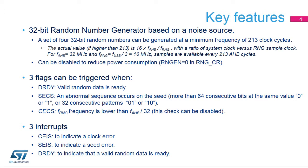A clock error current status flag is set if the RNG clock is less than HCLK clock divided by 32. This check can be disabled, especially when the RNG clock is initialized low for maximum entropy.